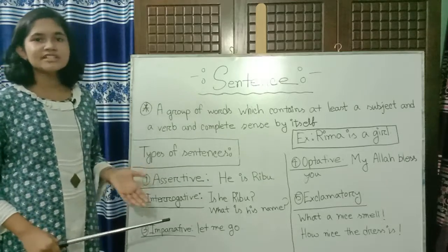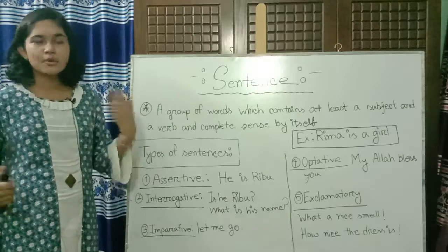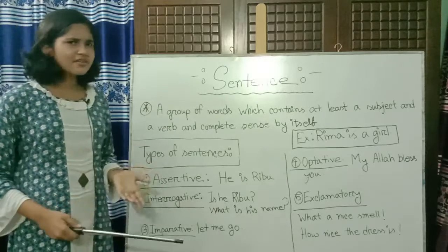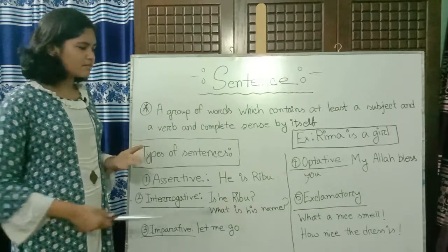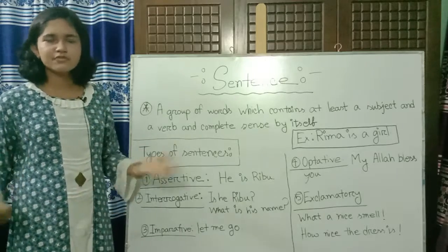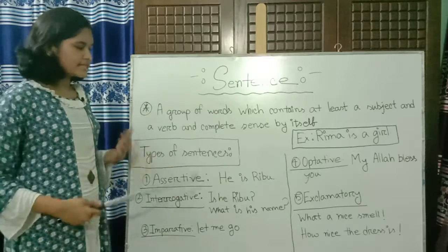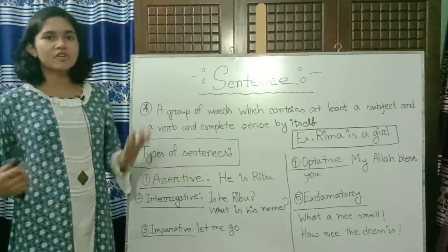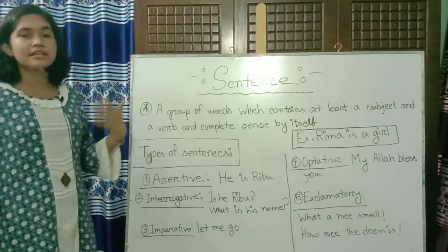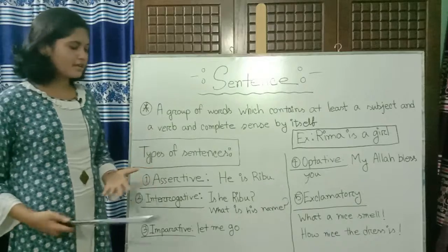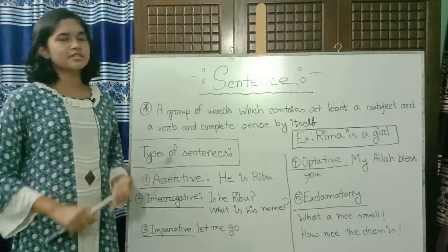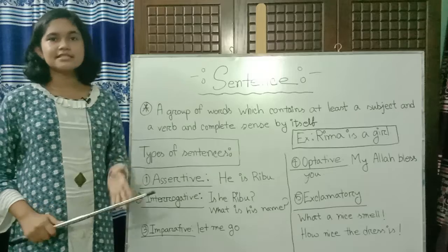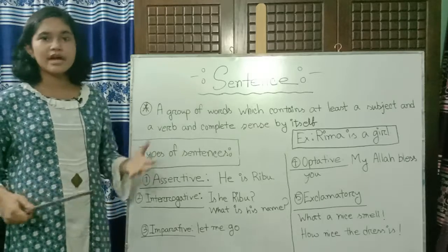The next type is the interrogative sentence, also known as a question sentence. It makes questions, like 'Is he Ribu?' You can use any name — Rahim, Karim, or others. In our next video we are going to learn the types of sentence structure and how to make them.